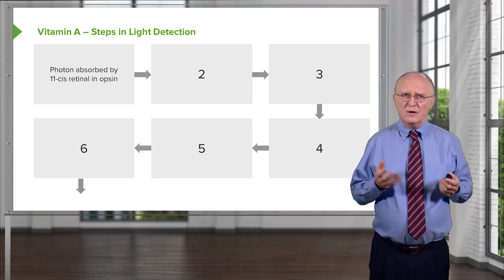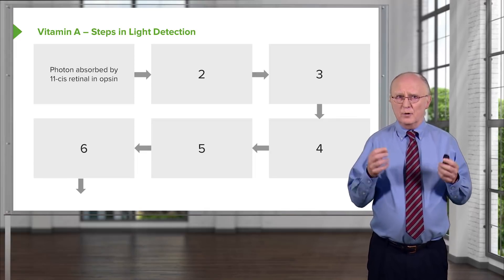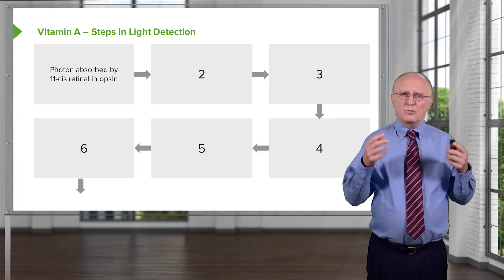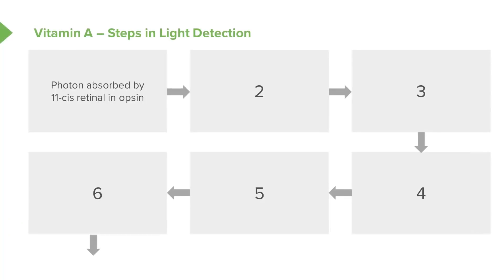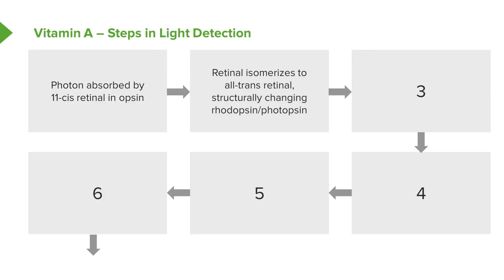The first step in the process involves absorption of a photon of light by the 11-cis retinal that's contained in the opsin. If this is a rod cell, that's rhodopsin; if this is a cone cell, it's photopsin. The retinal isomerizes in response to this photon of light to change it from the 11-cis form to the all-trans form. This physical change in the structure of retinal affects the rhodopsin or photopsin that contains it.